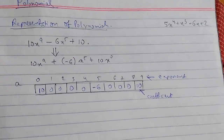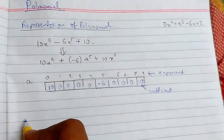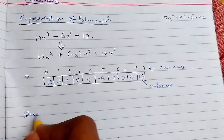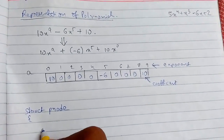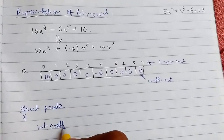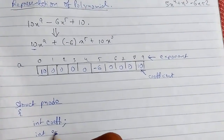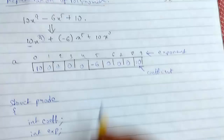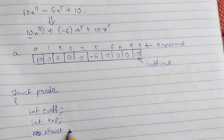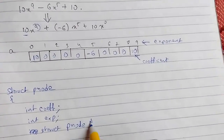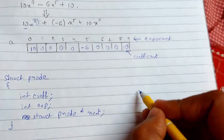Instead, we will use a linked list. First, let me make the structure of the linked list. The structure will be written like this: struct, we are writing pnode — polynomial node. It has three parts: coefficient, which is the coefficient; exponent, which is the exponent; and we will use the next part as a self-referential structure to traverse.